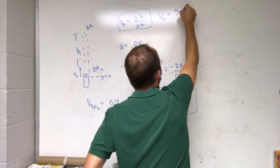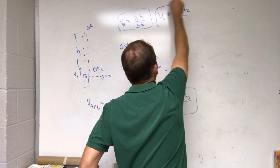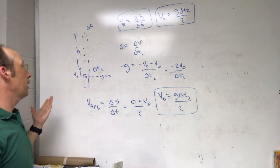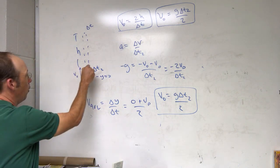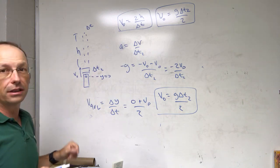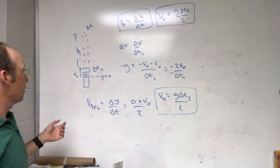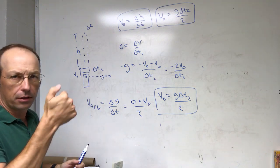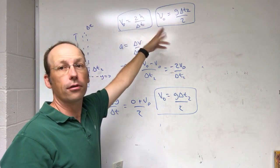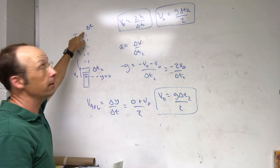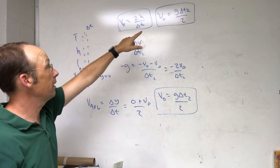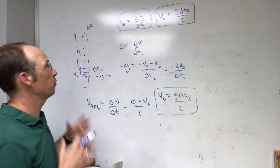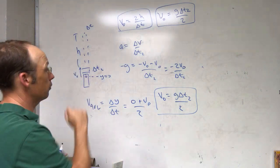So v0 equals g·delta-t₂ / 2, where g is 9.8 (not negative 9.8). Those are two ways to get the launch velocity. You could also record the time over a very short distance and assume no acceleration, giving v0 = delta-y / delta-t, but you couldn't do that with a stopwatch. Regarding uncertainty: h is uncertain, and delta-t to the apex will have larger uncertainty than delta-t₂ because it's easier to time over a longer interval.